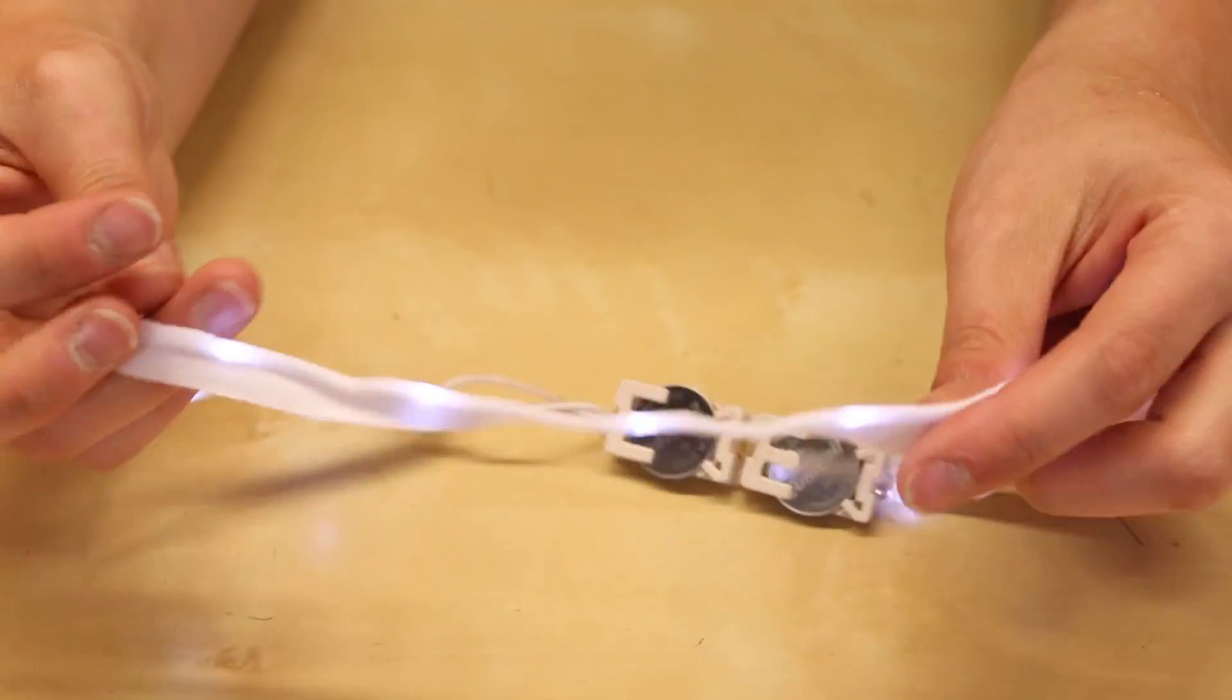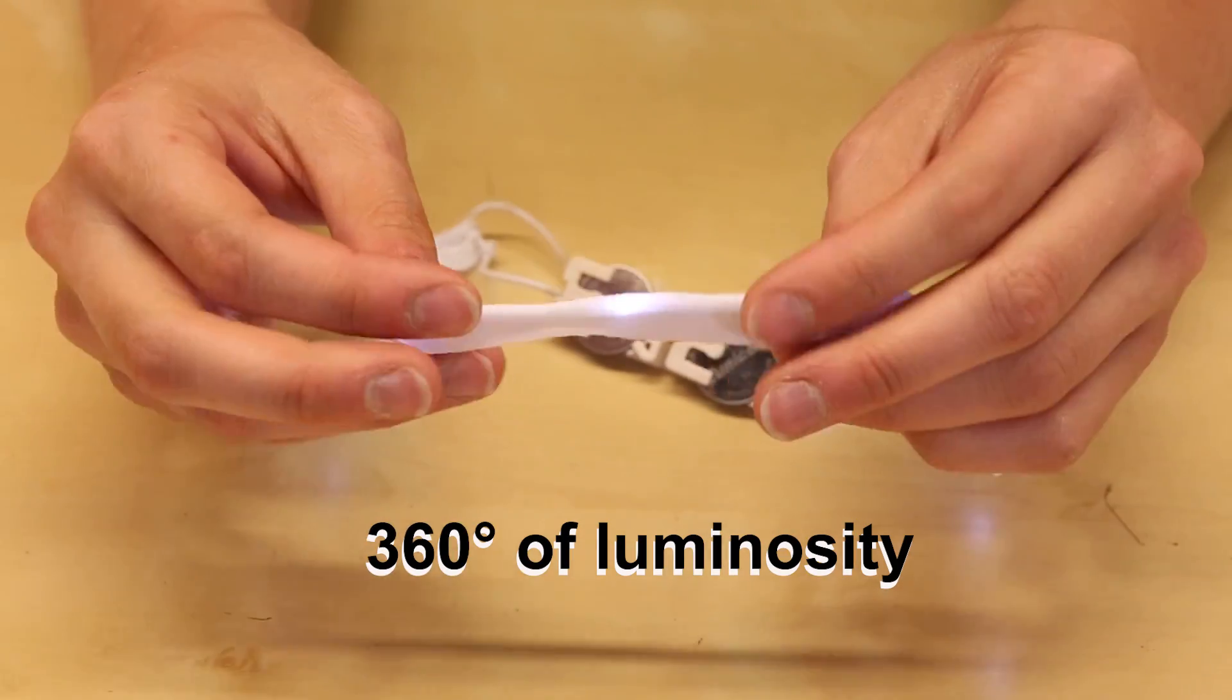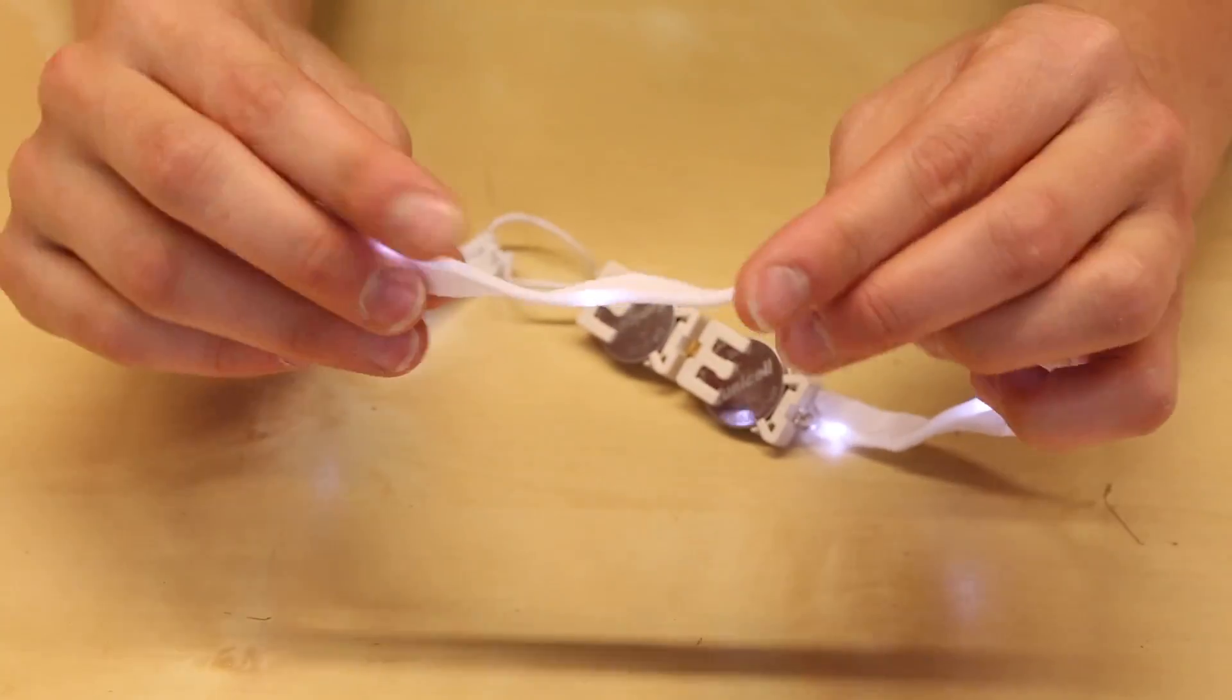Unlike traditional LED strips, the LEDs in the ribbon have 360 degrees of luminosity, so you can see them no matter how they are positioned or sewn.